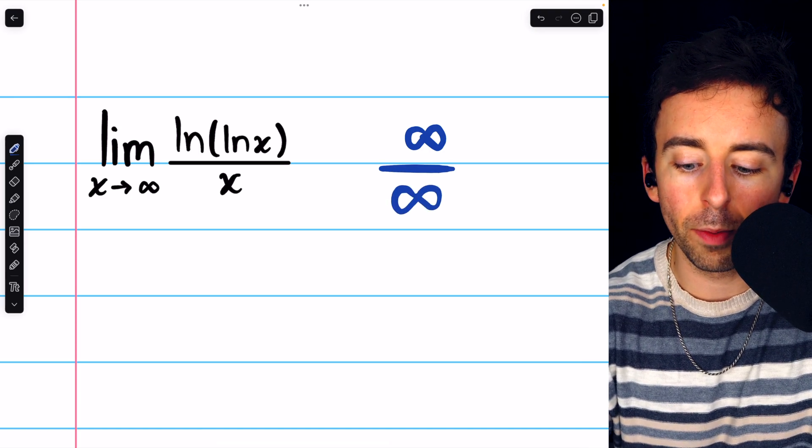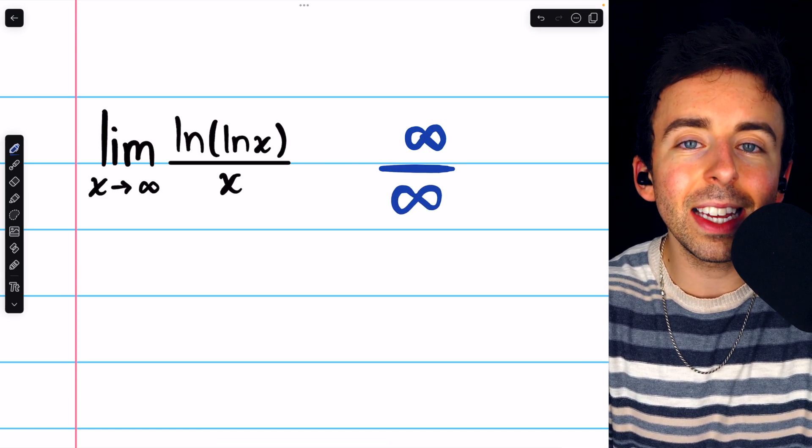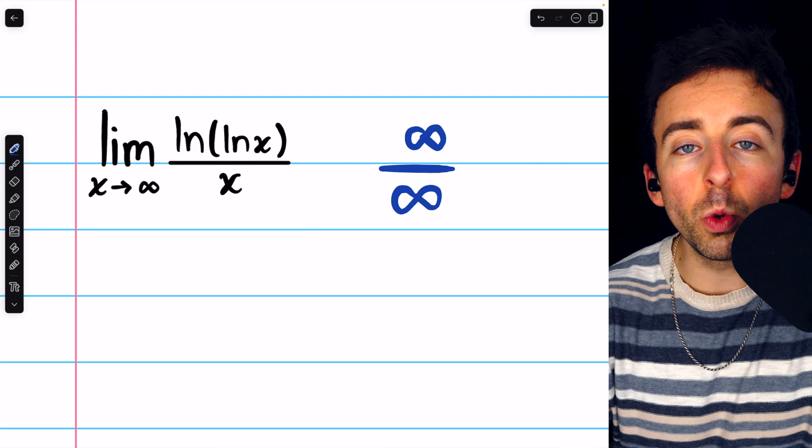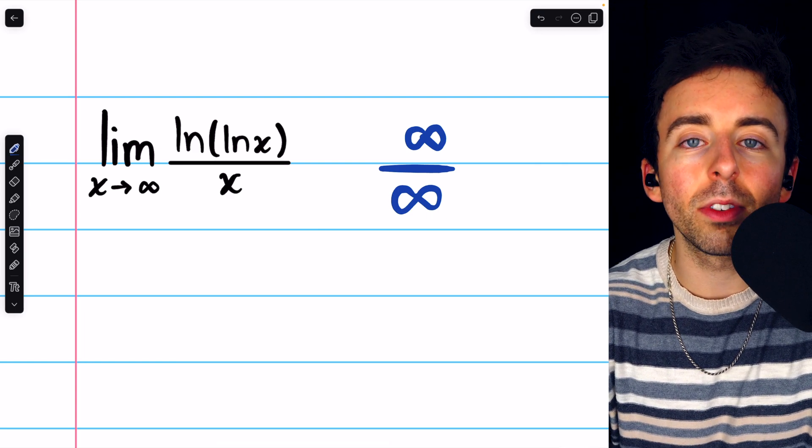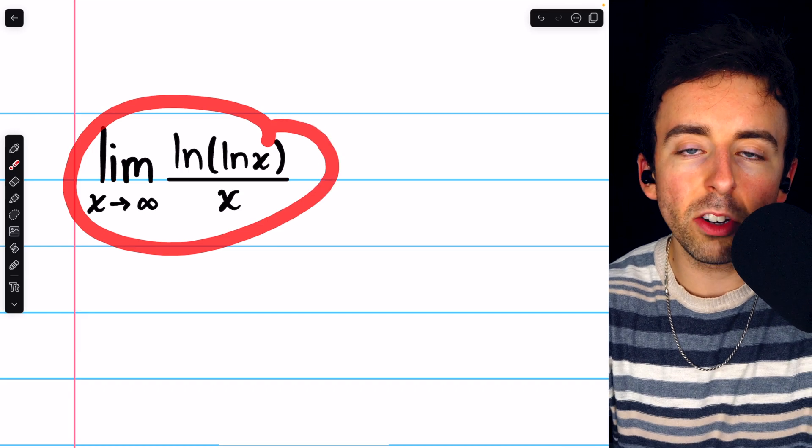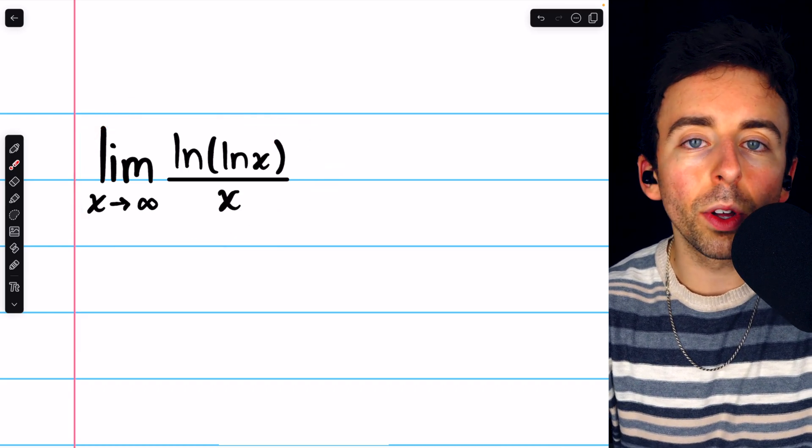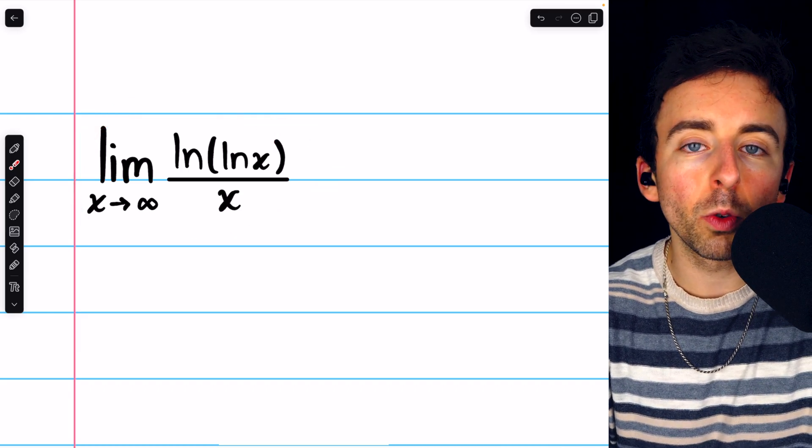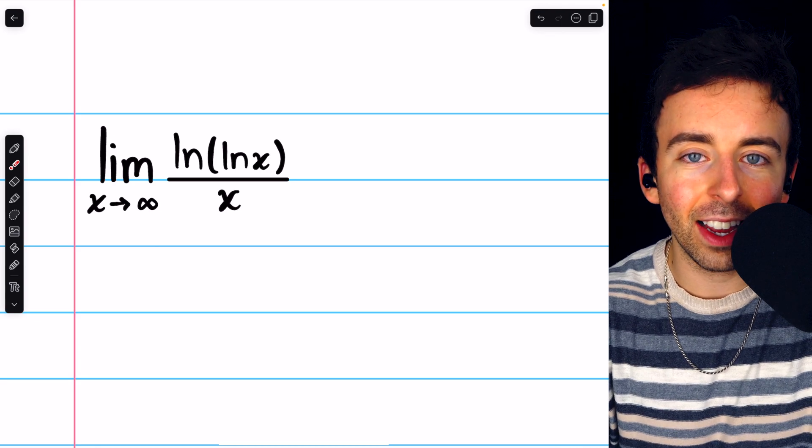Hence, this limit has the form infinity over infinity, which is an indeterminate form. So, to evaluate the limit, we can use L'Hopital's rule. L'Hopital's rule tells us that the limit of this ratio of functions will equal the limit of the ratio of their derivatives, provided that exists.